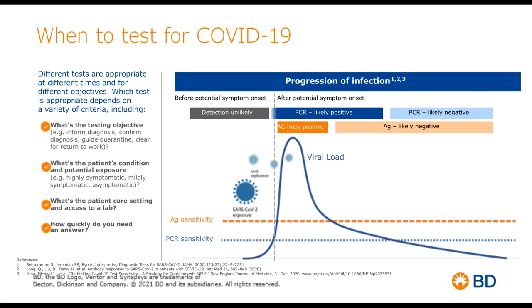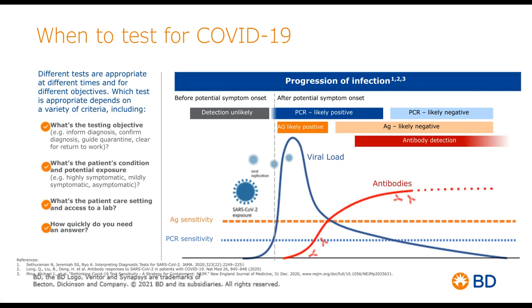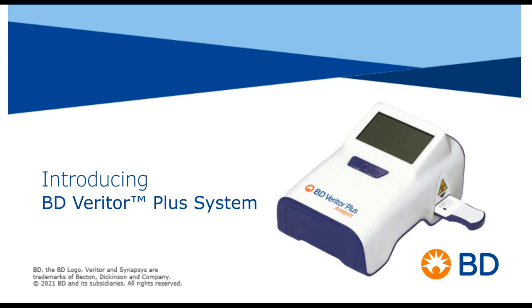One thing to clarify: you've also heard about antibody testing. Antibodies come along after an infection, after the immune system has cleared the virus from the body. We are not doing antibody testing with the Veritor system. We want to make sure everyone is clear that today we're talking about antigen testing — looking for the presence of the virus itself, not antibodies, which are responsible for clearing the virus. Now that we're clear on what antigen testing is and when it's appropriate, let's get you introduced to the BD Veritor Plus system.